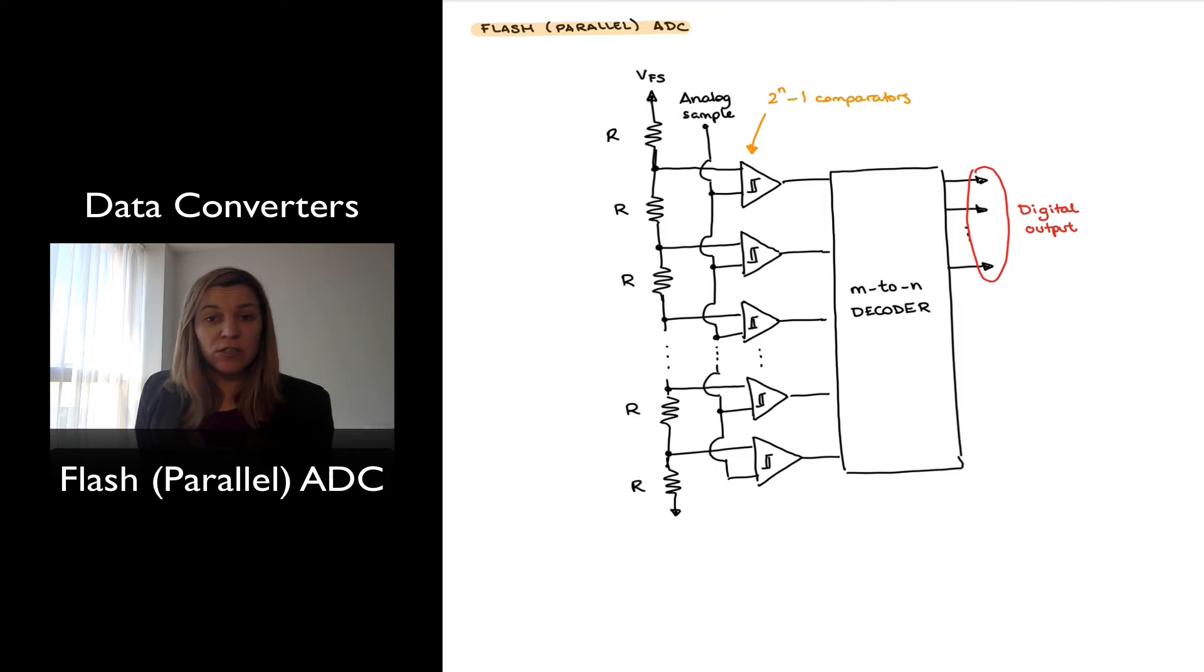The advantages of this system are pretty clear. It is the fastest. That is why it is also called the Flash ADC. So the main advantage is speed. Notice that the conversion rate is 1 clock cycle for any value of the analog input, because all those comparators are comparing at the same time.